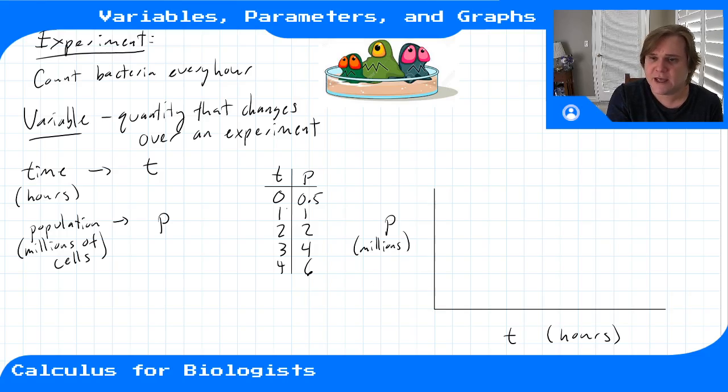And then you just plot each of these data points on the graph. So at time zero we have half a million at the start. An hour later we have one million, and then at two hours we have two million, and then at three hours we have four million, and then at four hours we have six million.